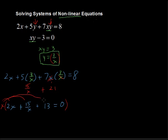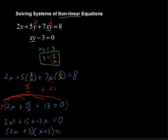Every single term is going to be multiplied by x. Over on this other side, we also multiply the other side of the equation. 0 times x is just 0. So what we get here is 2x squared plus 15 plus 13x equals 0, because the x's cancel in this middle term. 15 over x times x just equals 15. If I were to factor this, I would get 2x plus 3 times the quantity x plus 5 equals 0.